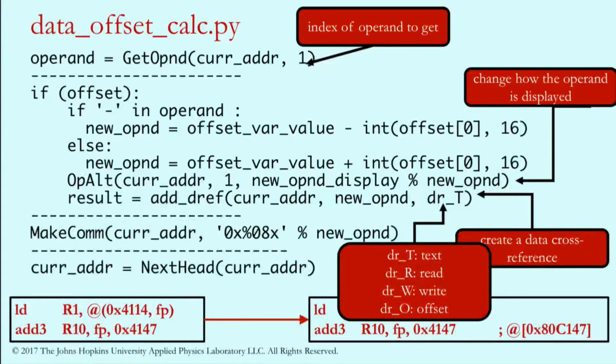The last one is make comm, and that's how we created the comment at the end of the statement when we didn't want to overwrite an operand. That also allowed us to click on it. The last statement we use is next head, and that will get you the next instruction or function in the database instead of having to figure out how long an instruction was. That's really how simple this can be to get these powerful tools and speed up your analysis process.